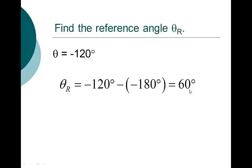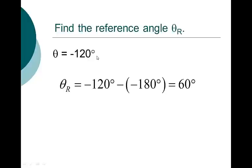The reference angle for negative 120 and the reference angle for 120 are exactly the same. So make sure your answer ends up being acute and positive — those are the two things we need. If I know the sine, cosine, and tangent of 60 degrees, which you should know, then you know the sine, cosine, and tangent of negative 120. Notice these are always acute and always positive.